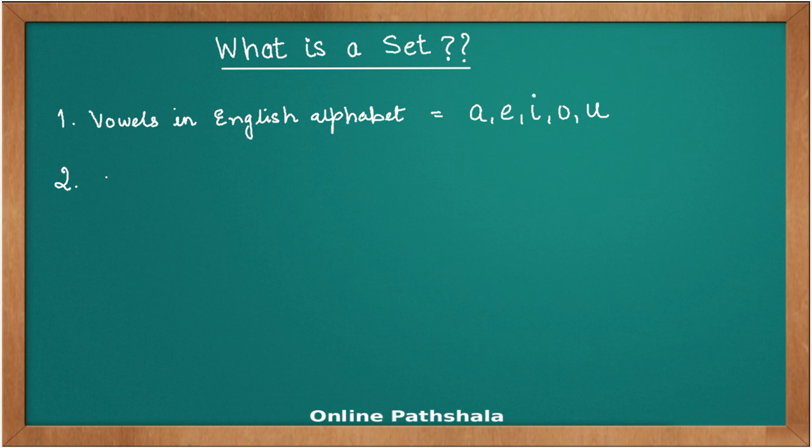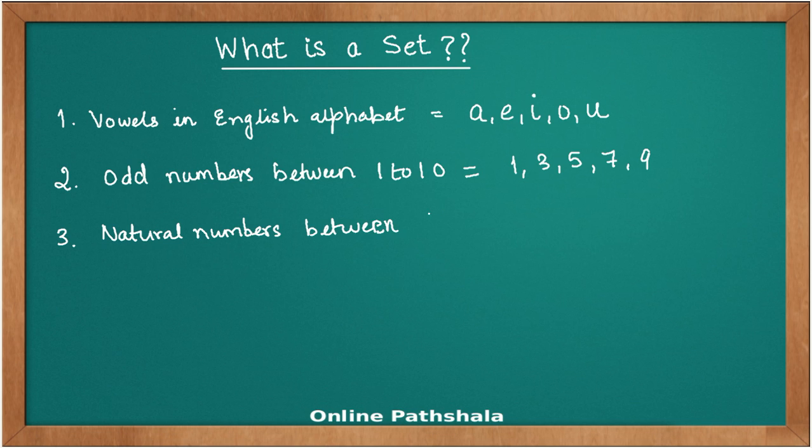Let us take another example. Let's say that we write down the odd numbers between one to ten. There could be many examples, you can make your own. So they would be 1, 3, 5, 7, and 9. You can take further examples. For instance, you can write natural numbers between, let's say, 5 and 10. So they would be 6, 7, 8, and 9.